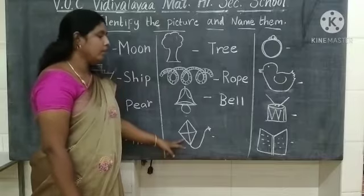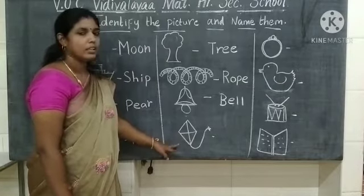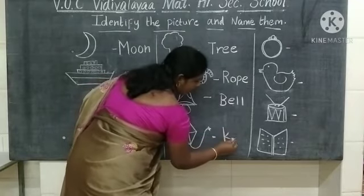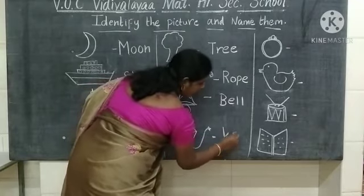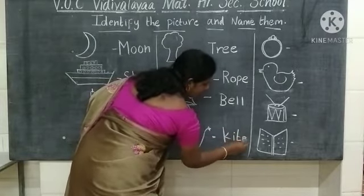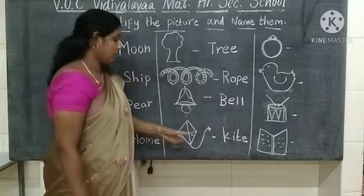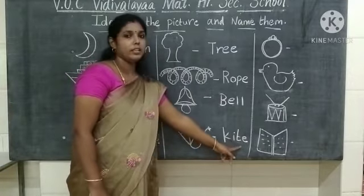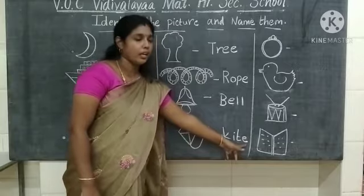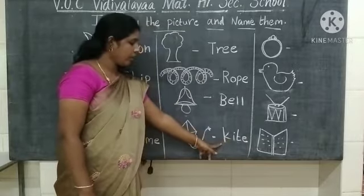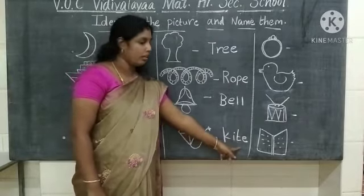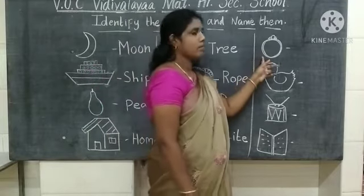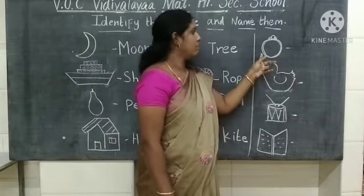What picture is this? This is a kite. What is the spelling of kite? K-I-T-E — kite. What is the spelling of kite? K-I-T-E — kite.